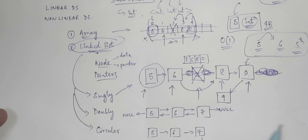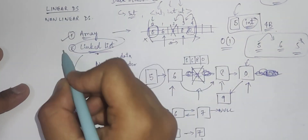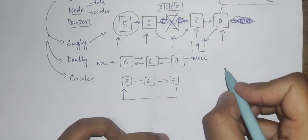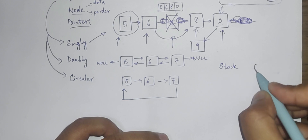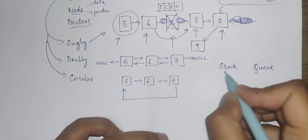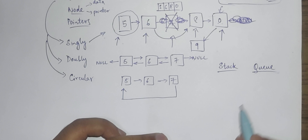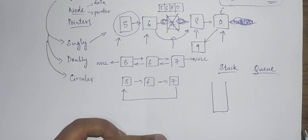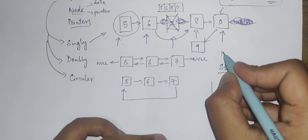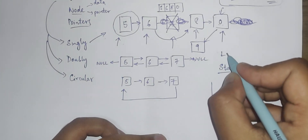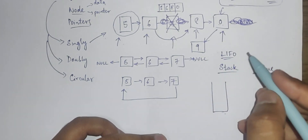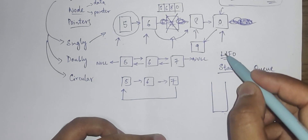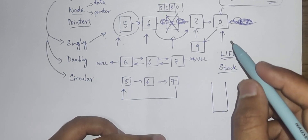Now considering some more linear data structures: we have talked about arrays and linked lists, but there are two more. There is a data structure called a stack and something called a queue. Stack is also a linear data structure. You can consider a stack as a last-in first-out data structure, meaning whatever element goes in last will be the first element to come out.